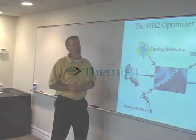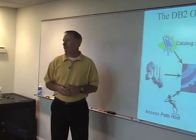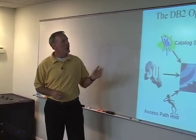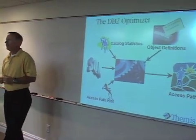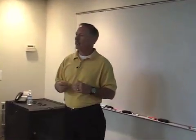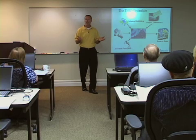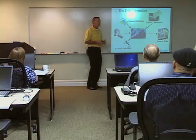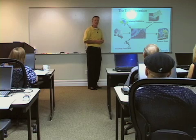We're going to continue talking about terminology related to relational database systems. Here's another common one that people hear often: the optimizer, or optimization. People wonder what it is and what it's all about. DB2 has an optimizer. Oracle has an optimizer. SQL Server has an optimizer. All relational database systems out there have optimizers, and most of them work typically the same.